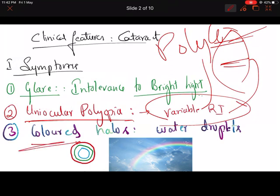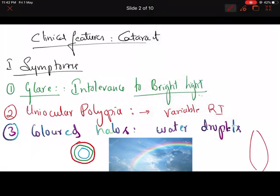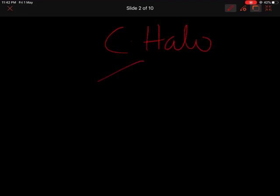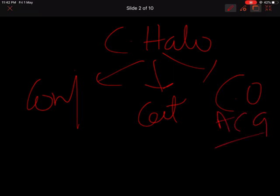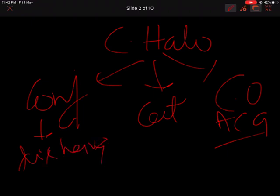The next symptom is colored halos. In immature cataract, water droplets present in the lens disperse white light causing colored halos. Colored halos can also be seen in conjunctivitis, cataract, and corneal edema — for example due to acute congestive glaucoma. In conjunctivitis, colored halos are due to discharge; if you clean the discharge off the eye, the colored halos vanish.